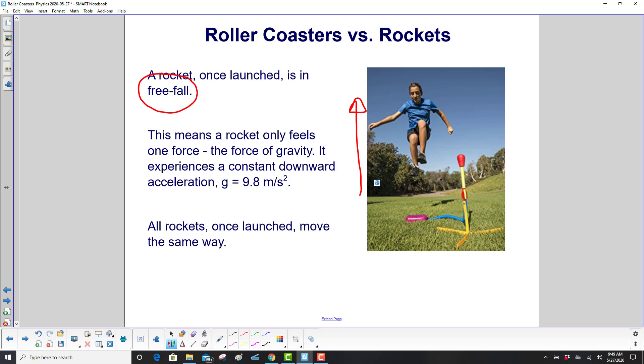Freefall means a rocket only feels one force, the force of gravity. It experiences a constant downward acceleration. Gravity is always trying to pull you down; g = 9.8 meters per second squared. All rockets, once launched, move the same way.